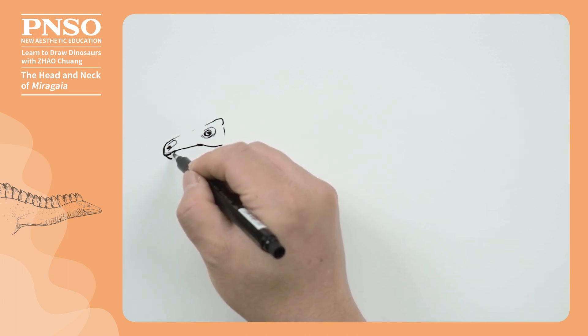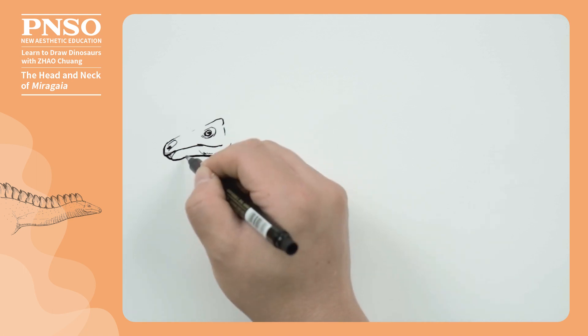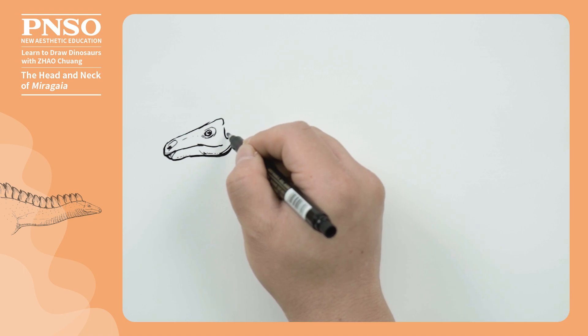Then, draw the lower jaw. The lower jaw also possessed a beak at the front. The lower jaw can be drawn thicker. Add some shading to the end of the mouth. Here is located its ear.